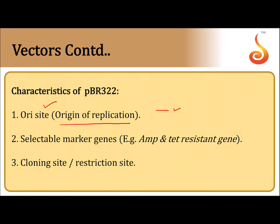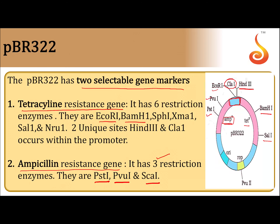Characteristics of pBR322: it has an autonomous replication region, also called the ori site, which increases the number of our desirable genes. It has two selectable marker genes — ampicillin and tetracycline resistant genes. It also has a cloning site, otherwise called restriction site, for example BamH1, where the desirable gene is introduced.